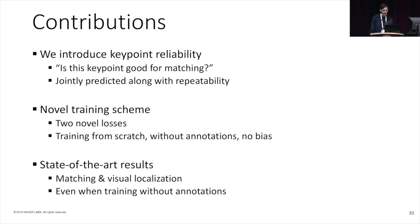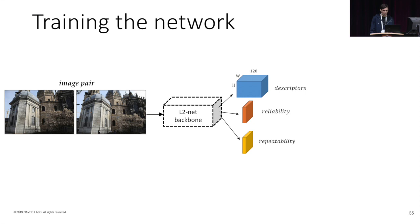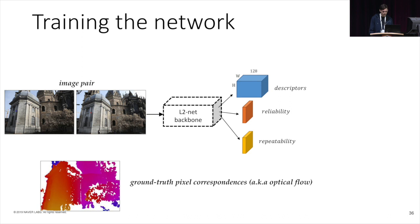So here is how we train the network. We simply feed it with image pairs, and for each image, the network computes descriptors, reliability, and repeatability at each pixel. Each image is annotated with ground truth pixel correspondences. Those can be either generated synthetically by applying random transformations to any image, or image pairs could be sampled from structure-from-motion datasets, in which case we compute the correspondences using conventional tools like optical flow methods.